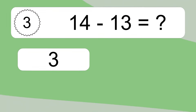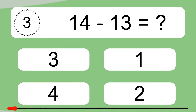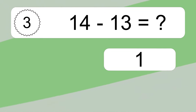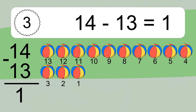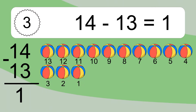14 minus 13 equals what? 14 minus 13 equals 1. Let's count it: 13, 12, 11, 10, 9, 8, 7, 6, 5, 4, 3, 2, 1.